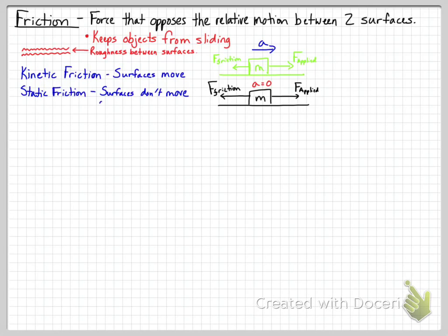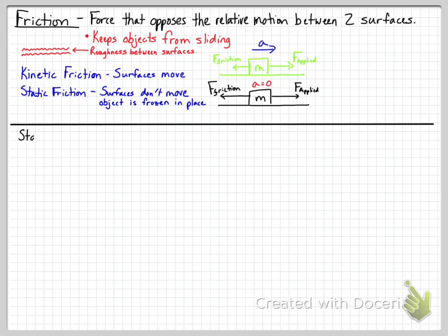In the kinetic friction case, if I apply a force to the right and friction acts to the left, and the object is moving and has some acceleration, then I'm pushing harder than friction is allowing. With static friction, if I apply a force to the right and friction pushes back but the box does not move, I am not pushing hard enough to overcome the stationary friction. Static friction means the object is frozen in place, and as long as it is frozen in place, I can't move it.